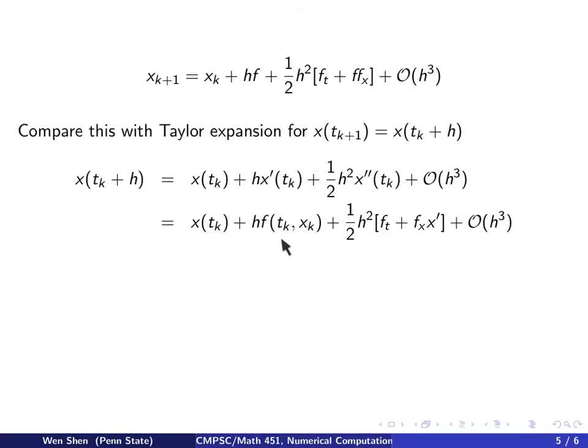x prime we know is just f, we plug that in. And then x double prime, we know is ft plus fx times x prime and we plug it in. And then we have the third order term. Now we drop the notation of the dependence on tk and xk and simply write it out like that. And now we can compare.